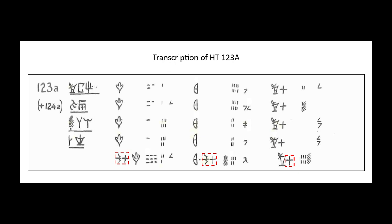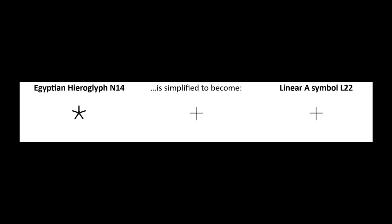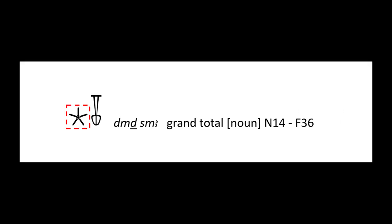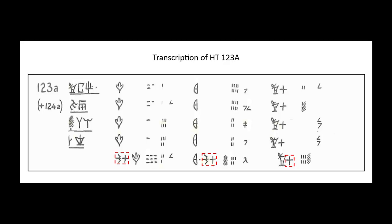Finally, all three totals have one symbol that is the same, so we can infer that symbol means 'total' — and indeed it does. With this symbol, however, we have to think a bit more laterally as to how Egyptian hieroglyph N14 became Linear A symbol L22. This simplification presumably took place because it was easier to write a cross with two intersecting lines rather than a five-pointed star with five lines meeting at the centre. This therefore represents the first hieroglyph in the Egyptian word for 'grand total.' So we have grand totals on New Year's Day in the first two columns for rams and wool, as the numbers told us we should expect, and by inference only the current total in the third column — the deficit.